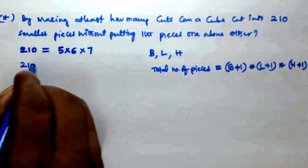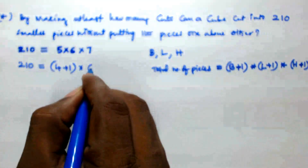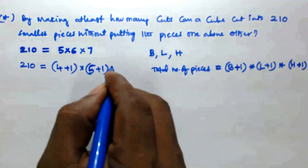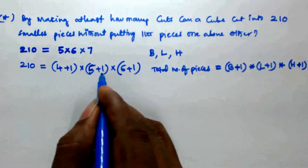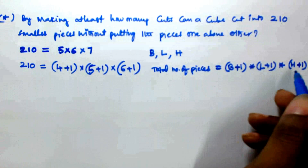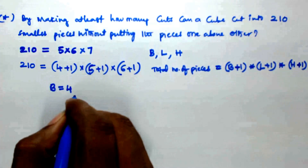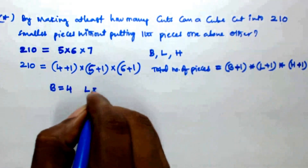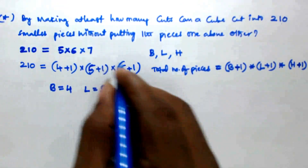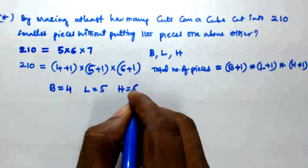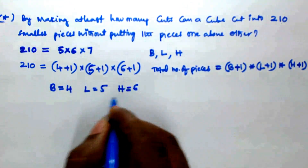Equating this with the formula, we get b = 4, meaning 4 cuts are made along the breadth; l = 5, meaning 5 cuts are made along the length; and h = 6, meaning 6 cuts are made along the height.